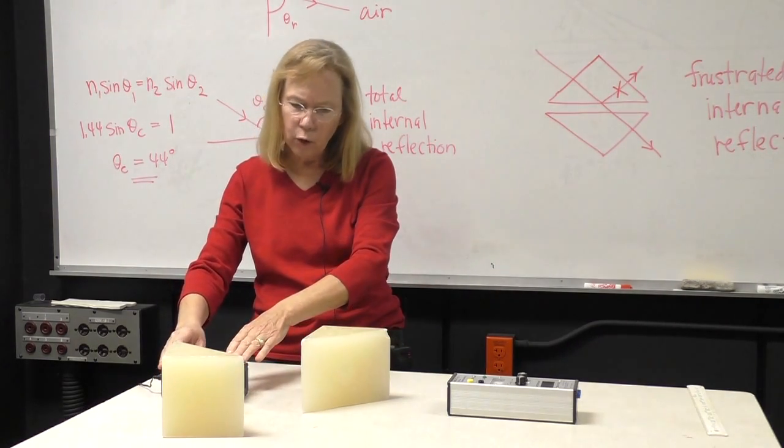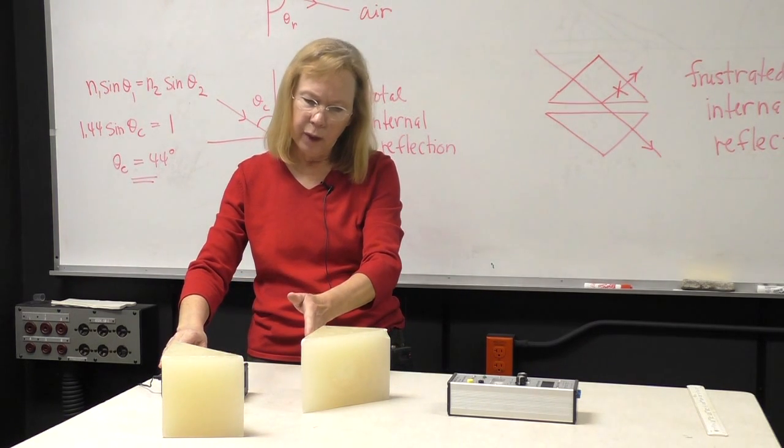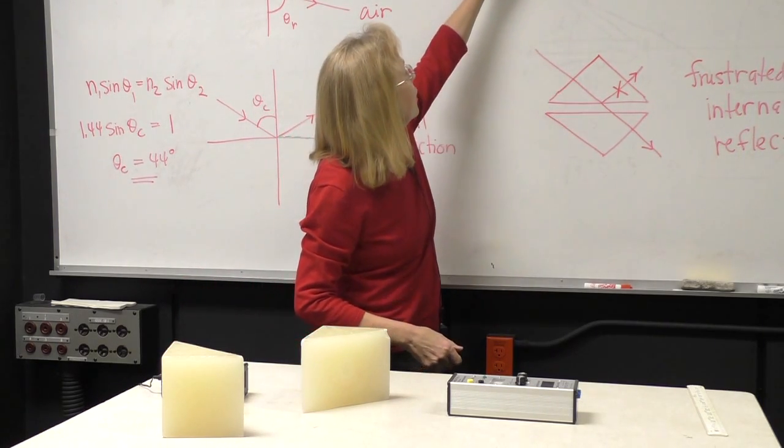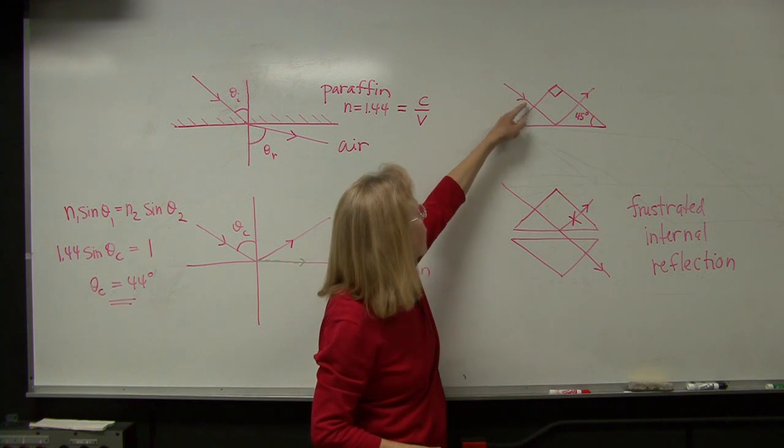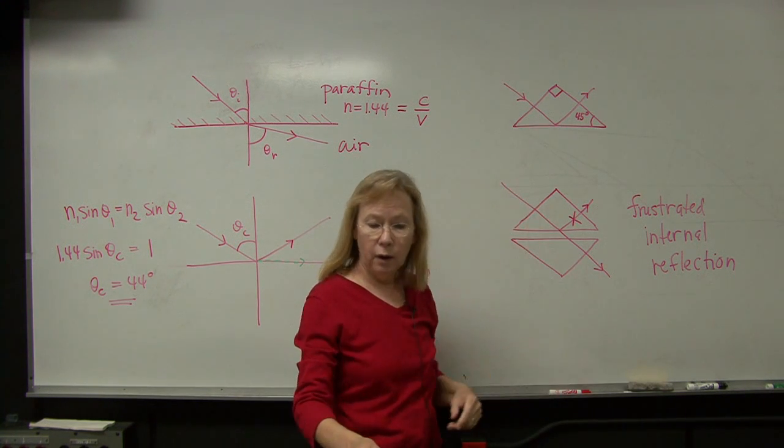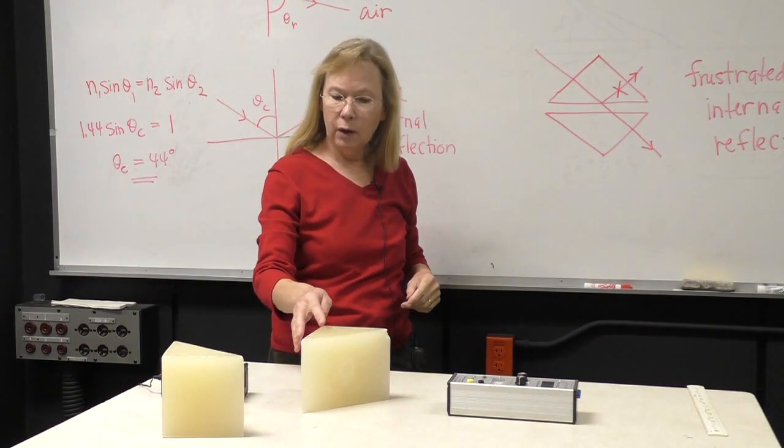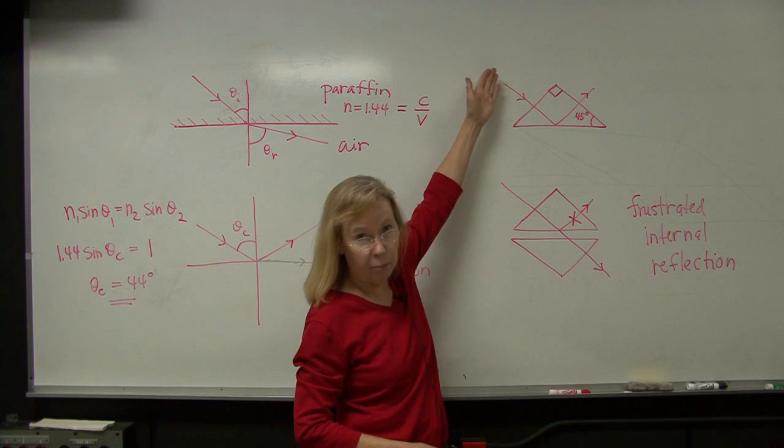So I'm going to use this microwave transmitter to have an electromagnetic wave impact the surface of this prism. And I'm going to have it come in normal to the surface. So because of the fact that I've got a different material that the wave is coming into, some of that energy is going to be reflected back. But some of the energy will go into the prism.